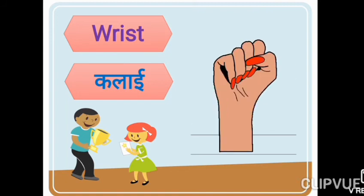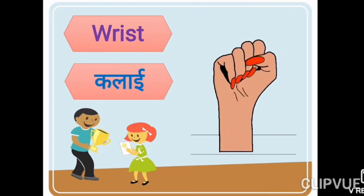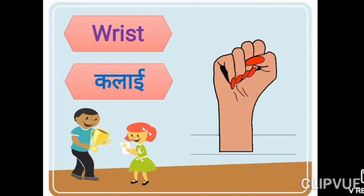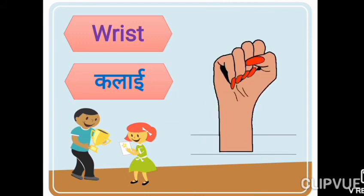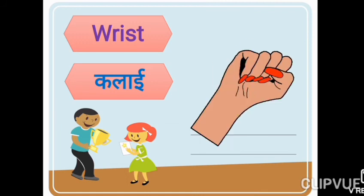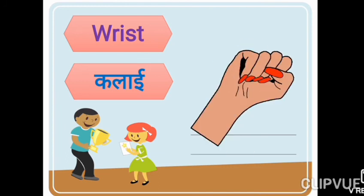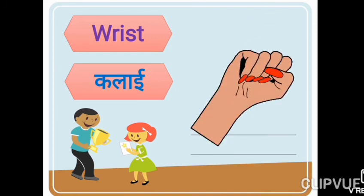Next: wrist — W-R-I-S-T, wrist. Wrist means kalai. On our wrist we tie things like a bhagwan ka dhaga, rakhi, or we wear bangles and bracelets — that body part is the wrist. The narrow part at the end of your arm, below your fingers, is called the wrist.